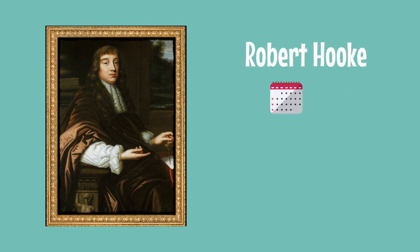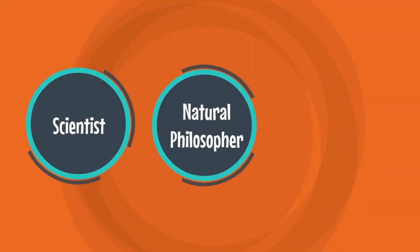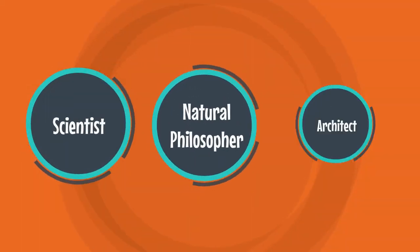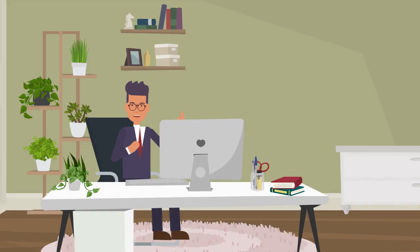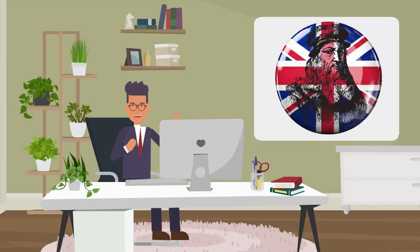Robert Hooke was born in 1635 in Freshwater on the Isle of Wight, England. He was a scientist, natural philosopher, and architect who became a key figure in the Scientific Revolution. In recent times, he is also referred to as England's Leonardo.